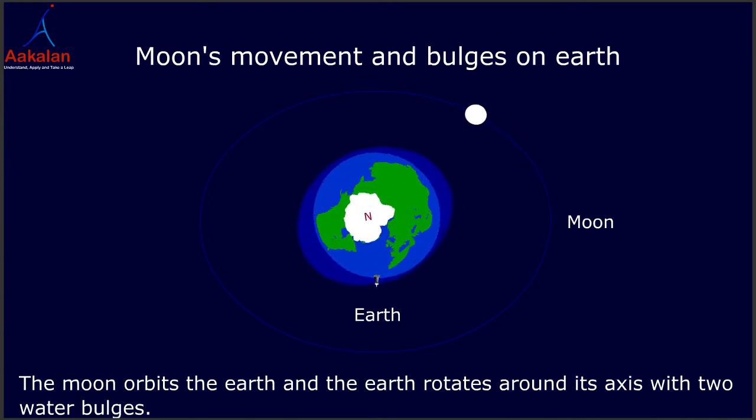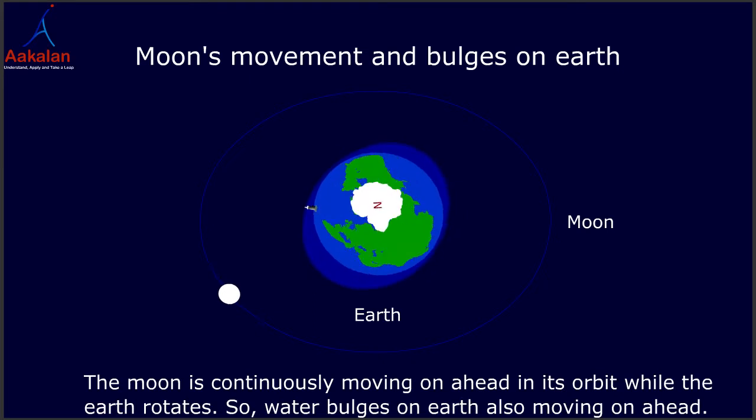The moon orbits the Earth and the Earth rotates around its axis with two water bulges. The moon is continuously moving ahead in its orbit while the Earth rotates, so water bulges on Earth are also moving ahead.